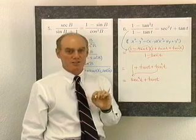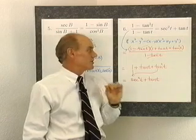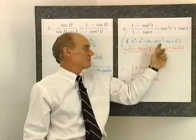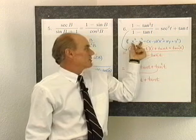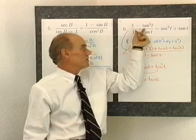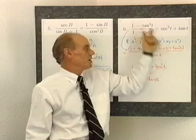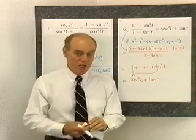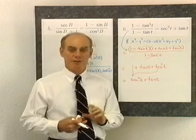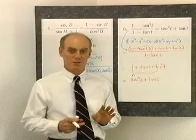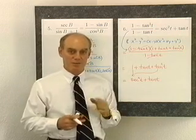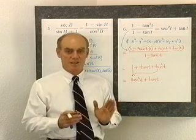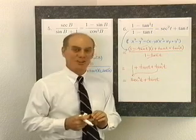If this factoring of 1 minus tangent cubed is something you haven't seen for a while, go back to an algebra book and look at factoring the difference of two cubes — that's the formula used here. So that's a variety of problems involving verifying identities. In all cases, we used some of the eight basic identities for substitution, and then some algebra or manipulation to change one side of the identity into the other side.